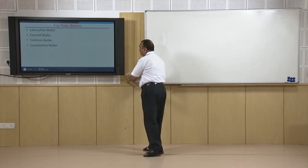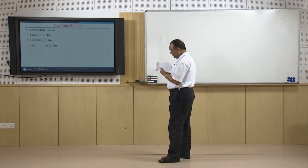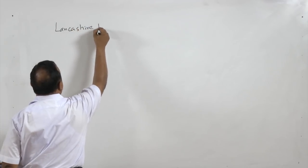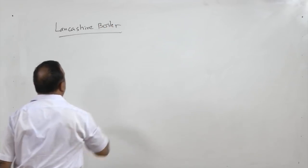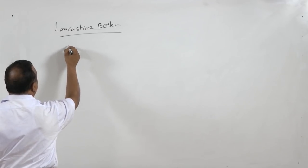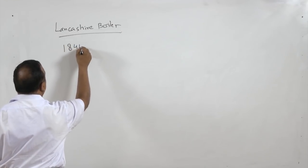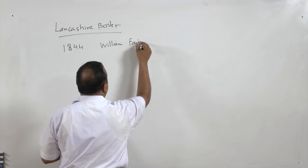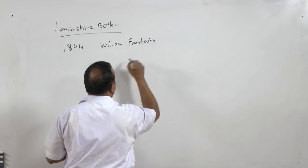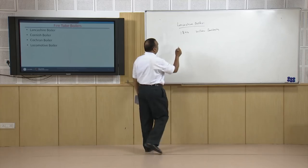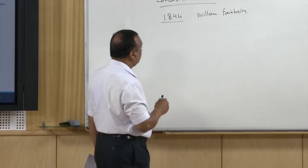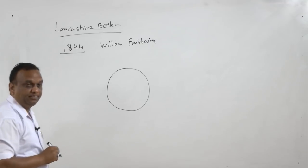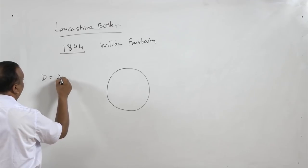Lancashire boiler was widely used in earlier days and it was a very popular steam boiler. It was invented or fabricated in 1844 by William Fairbairn. It consists of a shell — because it is a fire tube boiler — and the diameter of the shell is in the range of 2 to 3 meters.